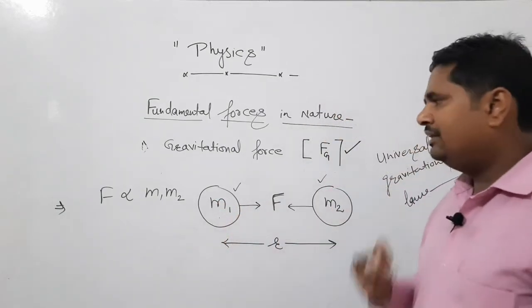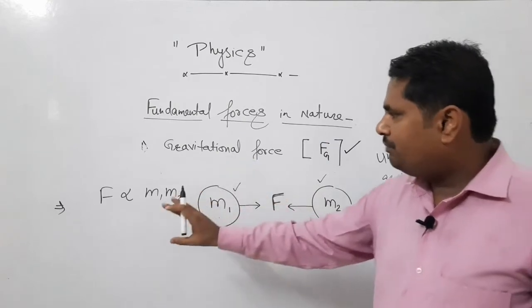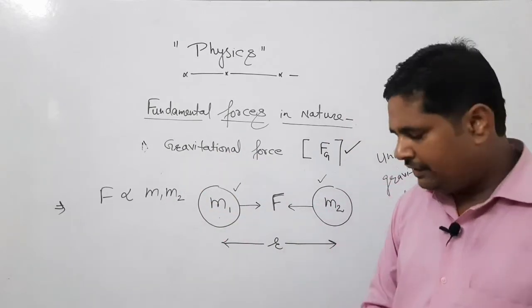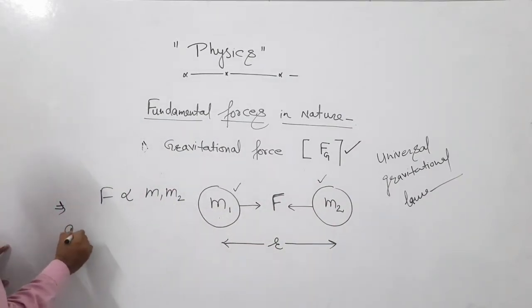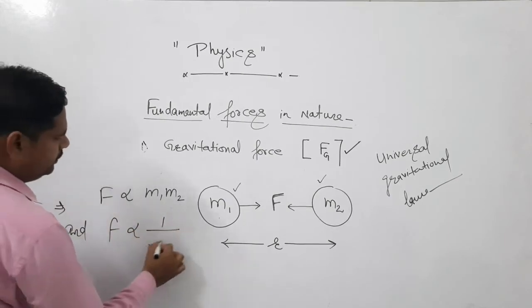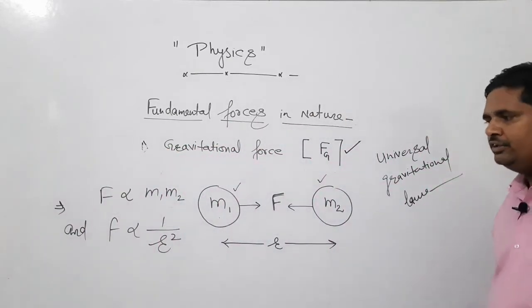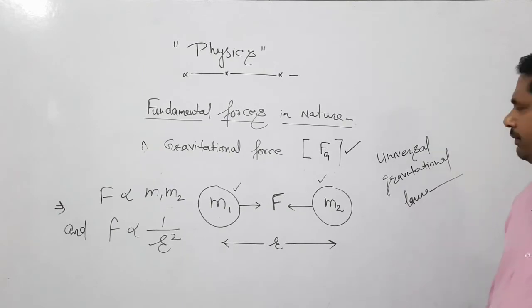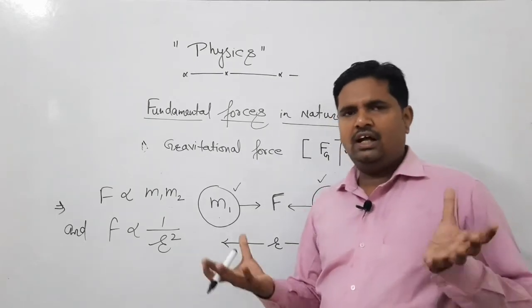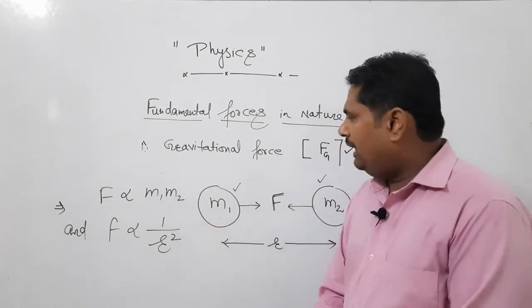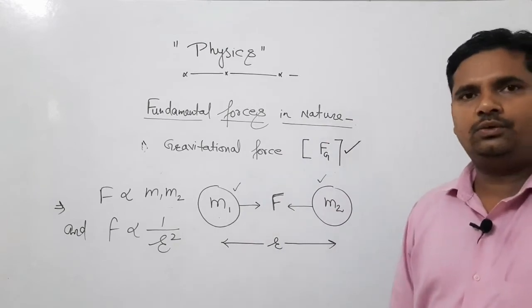Force between two bodies is directly proportional to the product of their masses and inversely proportional to the square of distance between them. Product of mass increases, force will be different for different objects. And if distance increases, then there will be decrease in forces.